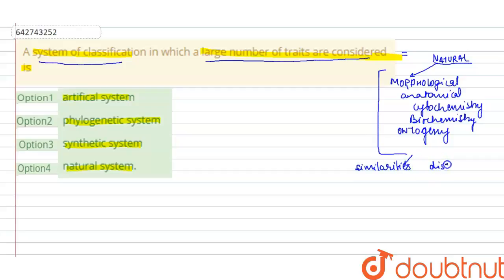or the dissimilarities between the plants. Whereas in phylogenetic classification, we just consider the evolutionary history. In artificial, we consider the vegetative characters and the sexual characters only. Synthetic is almost similar